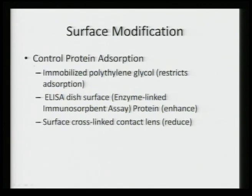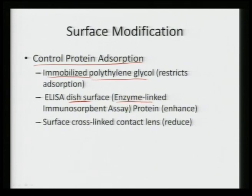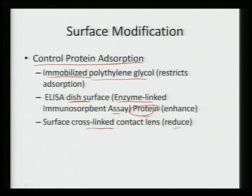Surface modification can also be required to control protein adsorption. To reduce adsorption, we can use immobilized polyethylene glycol. To enhance protein adsorption, we can use an ELISA dish surface — enzyme-linked immunosorbent assay. Surface cross-linking, such as for contact lenses, can reduce overall protein adsorption; otherwise, proteins adsorbing will cause cells to come onto the surface, adhere, and get adsorbed.